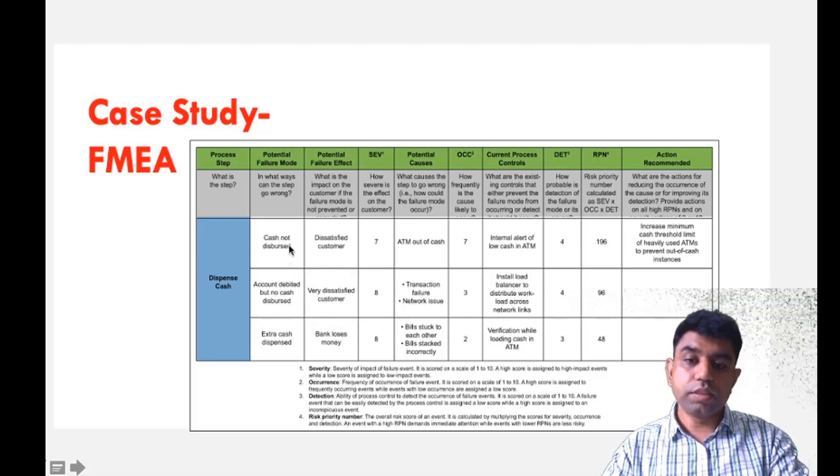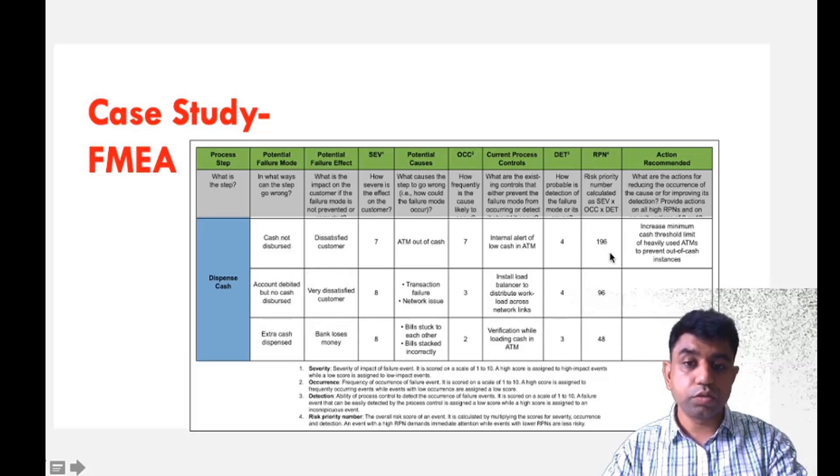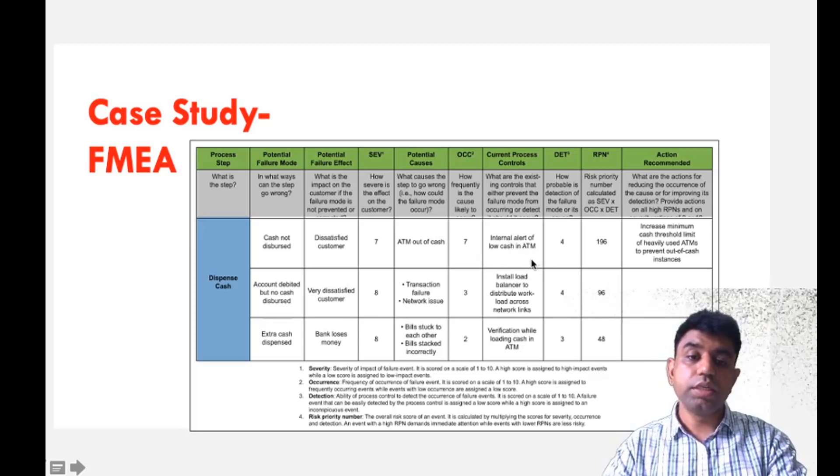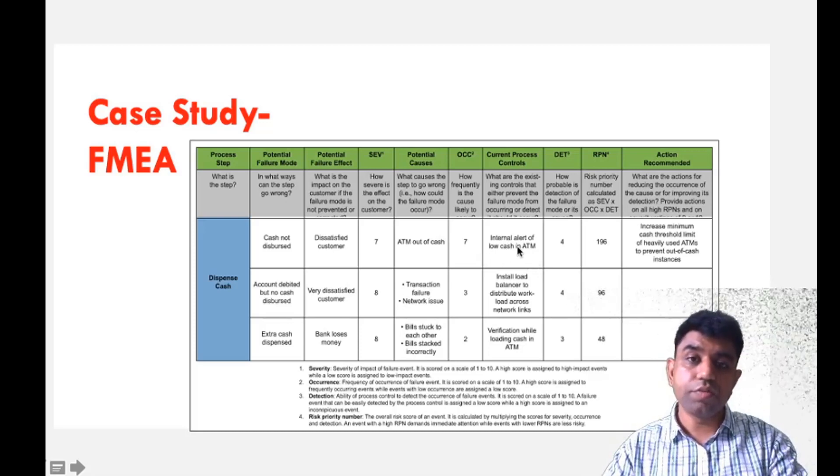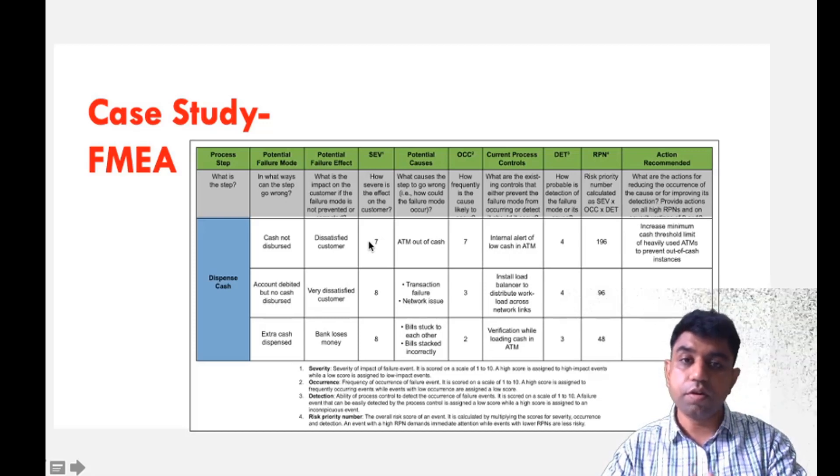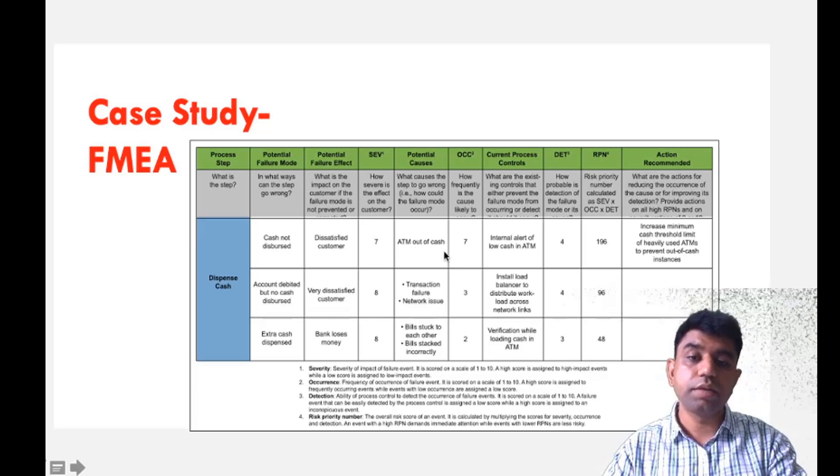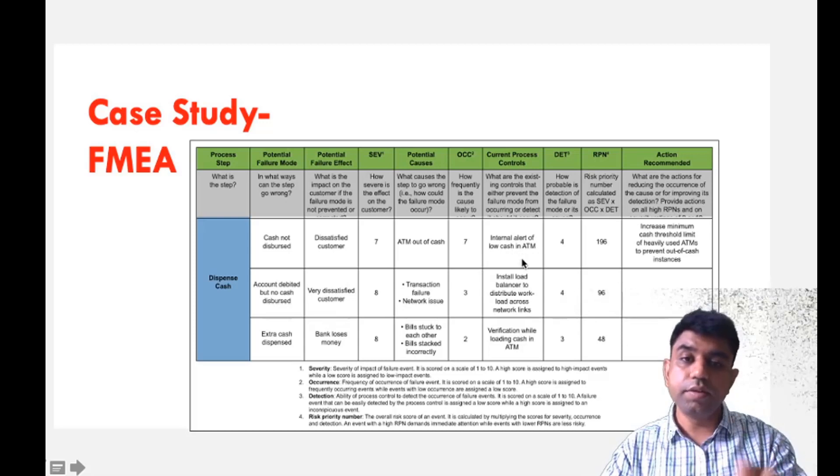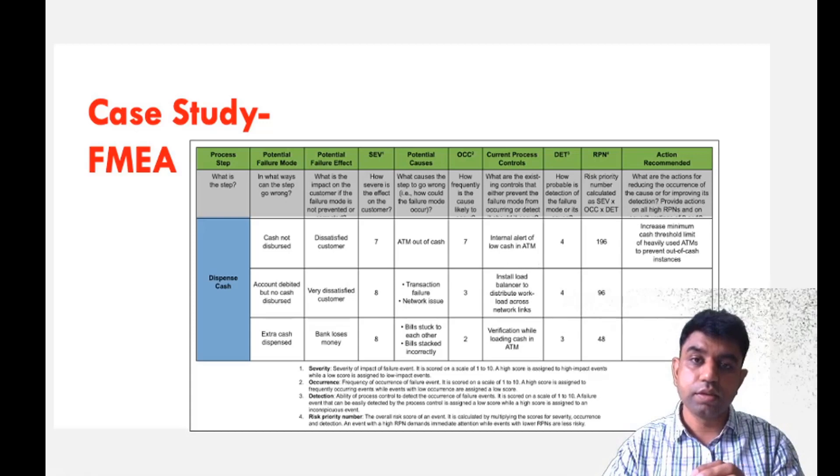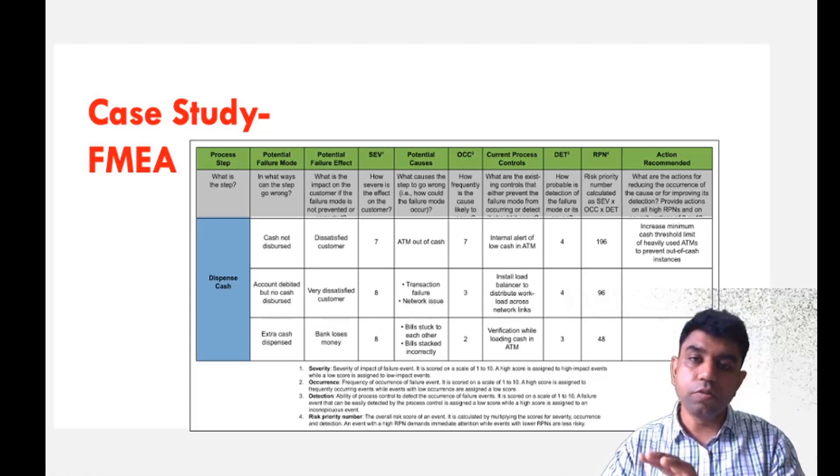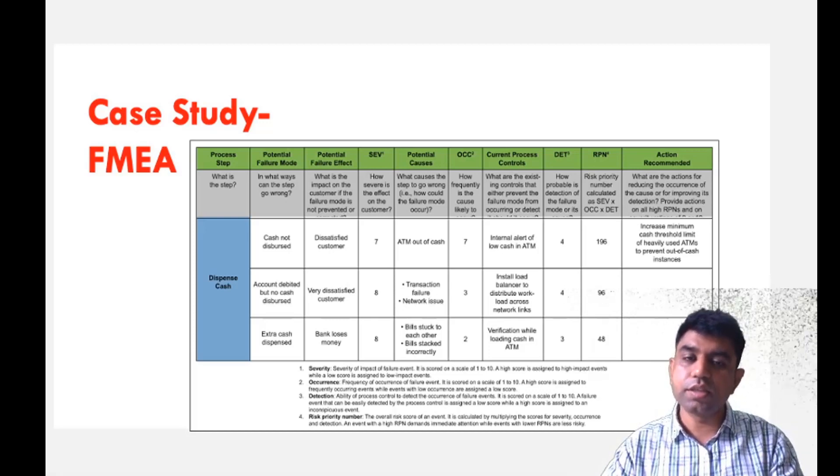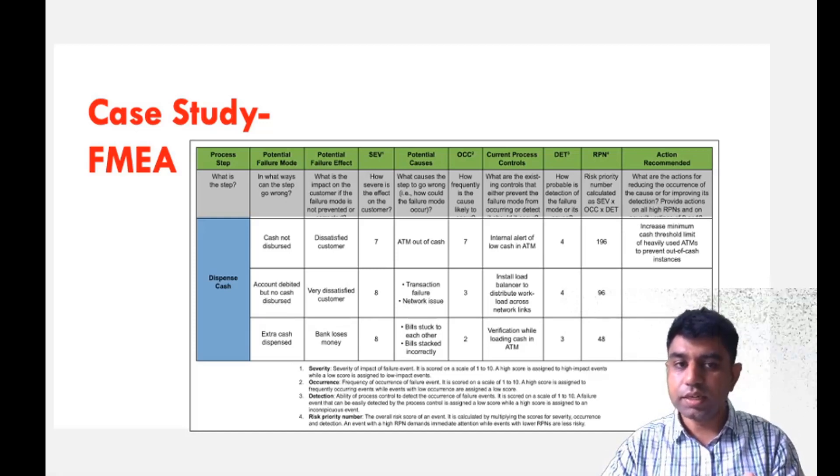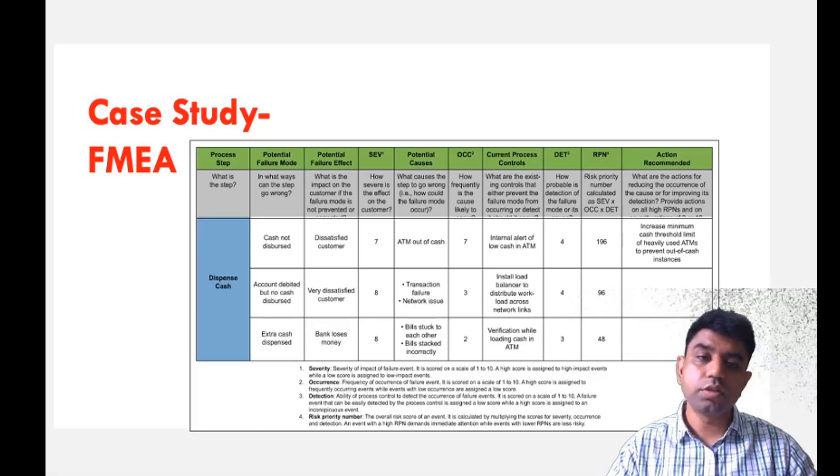Detection ranking is given. Based on this multiplication of severity, occurrence, and detection, we find the risk priority number. Cash not dispersed has the highest risk priority, so they need corrective action. The most important corrective action is internal alert of low cash in ATM. The frequency of this error is very high. We all face this. Cash is not getting dispersed because the ATM is out of cash. Many banks' ATMs nowadays show the message that they are running out of cash, so you can maintain customer trust.